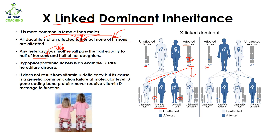In the case of an affected father, the affected X chromosome is transferred to the daughters only, because the Y chromosome goes to the sons. The X chromosome coming to the sons comes from their mother. So whenever the father has an affected X chromosome, all daughters will have that affected X chromosome. But if a mother has an affected X chromosome, half of the daughters as well as half of the sons will have the affected chromosome.